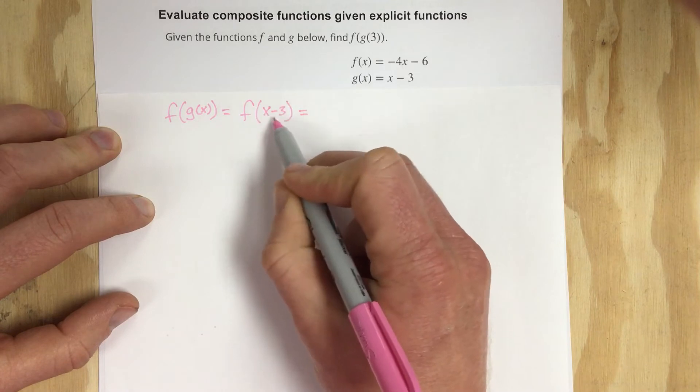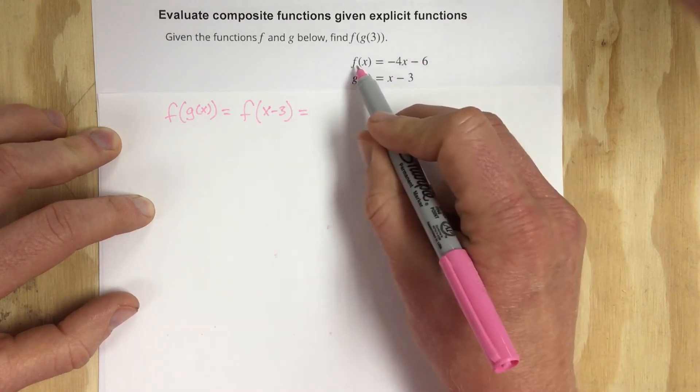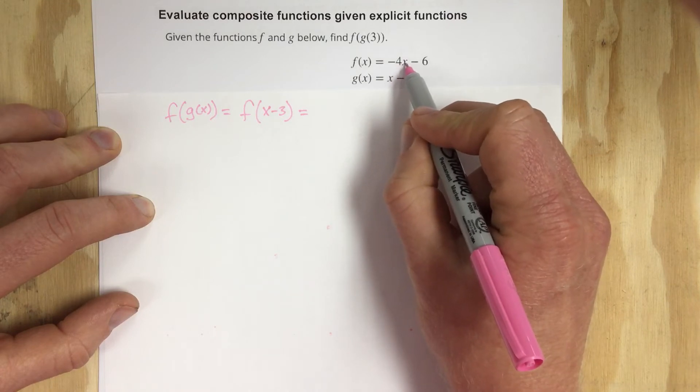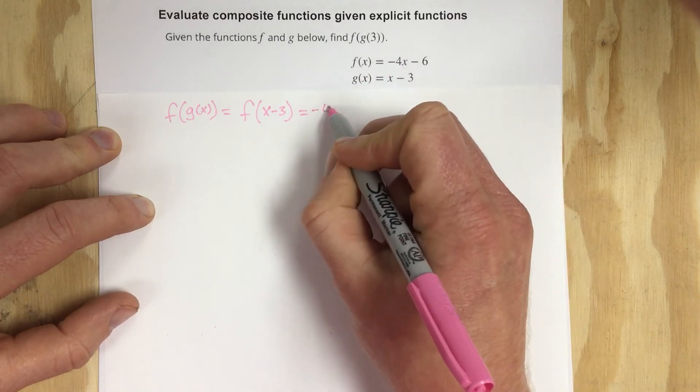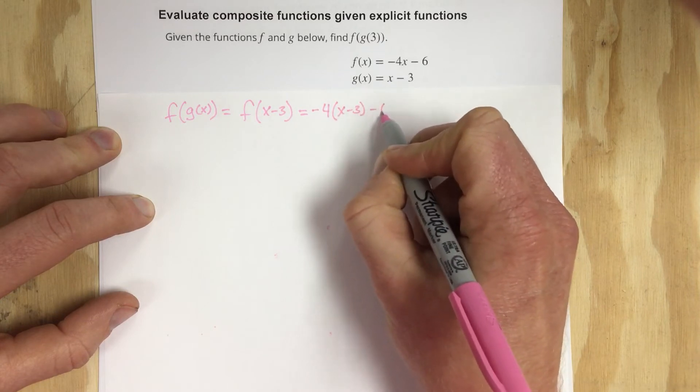Now I'm going to take the x - 3 and replace that into the f function. So I'm going to have -4(x - 3) - 6.